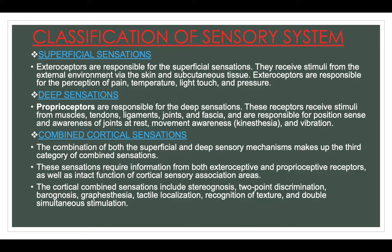Combined cortical sensation refers to the combination of both superficial and deep sensory mechanisms. These sensations require information from both exteroceptive and proprioceptive receptors, as well as intact function of cortical sensory association areas. Combined cortical sensation includes stereognosis, two-point discrimination, barognosis, graphesthesia, tactile localization, recognition of texture and double simultaneous stimulation.